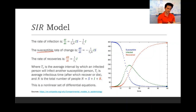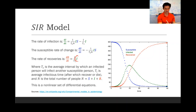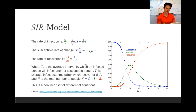The rate at which the susceptible population changes is given by the rate at which new infections occur. The rate at which people recover is given by the number of people who are currently infected times some constant. Those constants are the average interval by which an infected person will infect another susceptible person, and the average time spent being infectious, after which someone will recover or die.